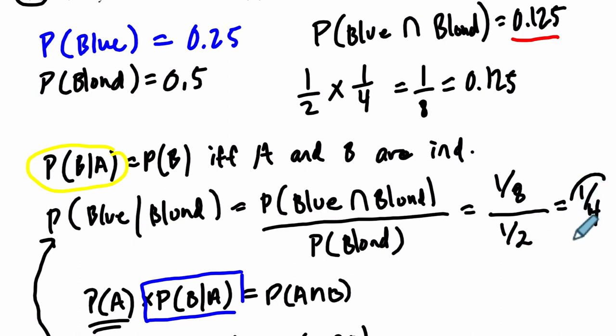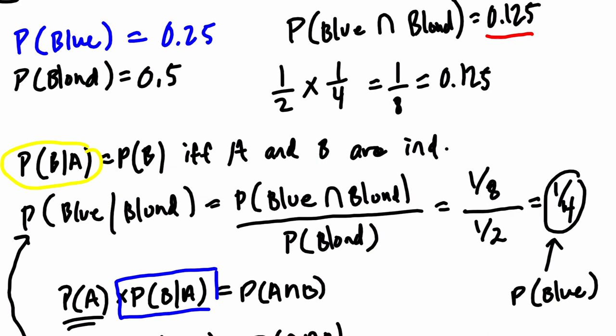And that is one-fourth, that's the probability of having blue eyes. This shows us the probability of having blue eyes is the same whether you have blonde hair or not. The probability of B given A equals the probability of B, and that means that A and B are independent.